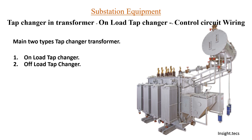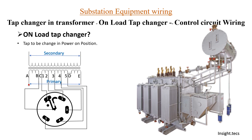There are two main types of tap changers in a transformer: one is the onload tap changer and the other is the offload tap changer. We have discussed both in our previous videos and seen how onload tap changing occurs and how the movement of the tap changer occurs.